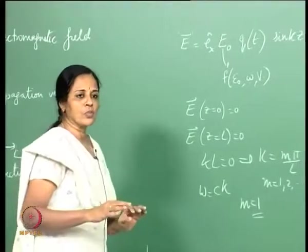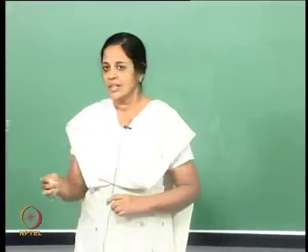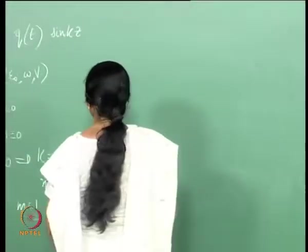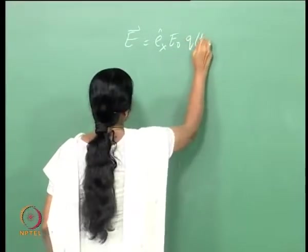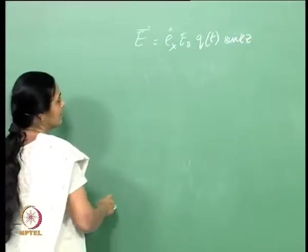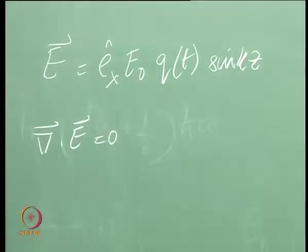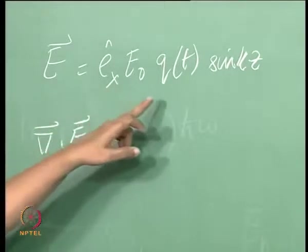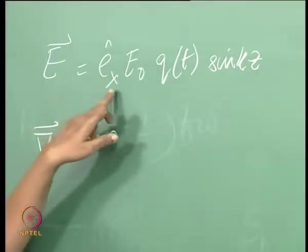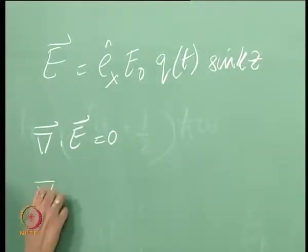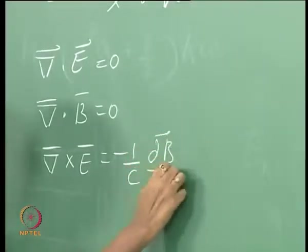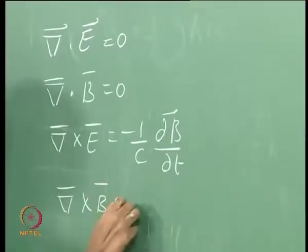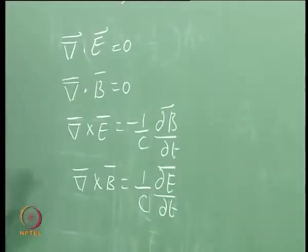This problem has a one-to-one correspondence with the linear harmonic oscillator problem, and that is the mapping we will see. In general, I have the electromagnetic field E = x̂ E_0 q(t) sin(kz). I have Maxwell's equations: ∇·E = 0, which is automatically satisfied here because E is along the x axis and is a function of z. ∇·B = 0, ∇×E = −(1/c) ∂B/∂t, and ∇×B = (1/c) ∂E/∂t, assuming no free charges or currents — these are the source-free Maxwell's equations.